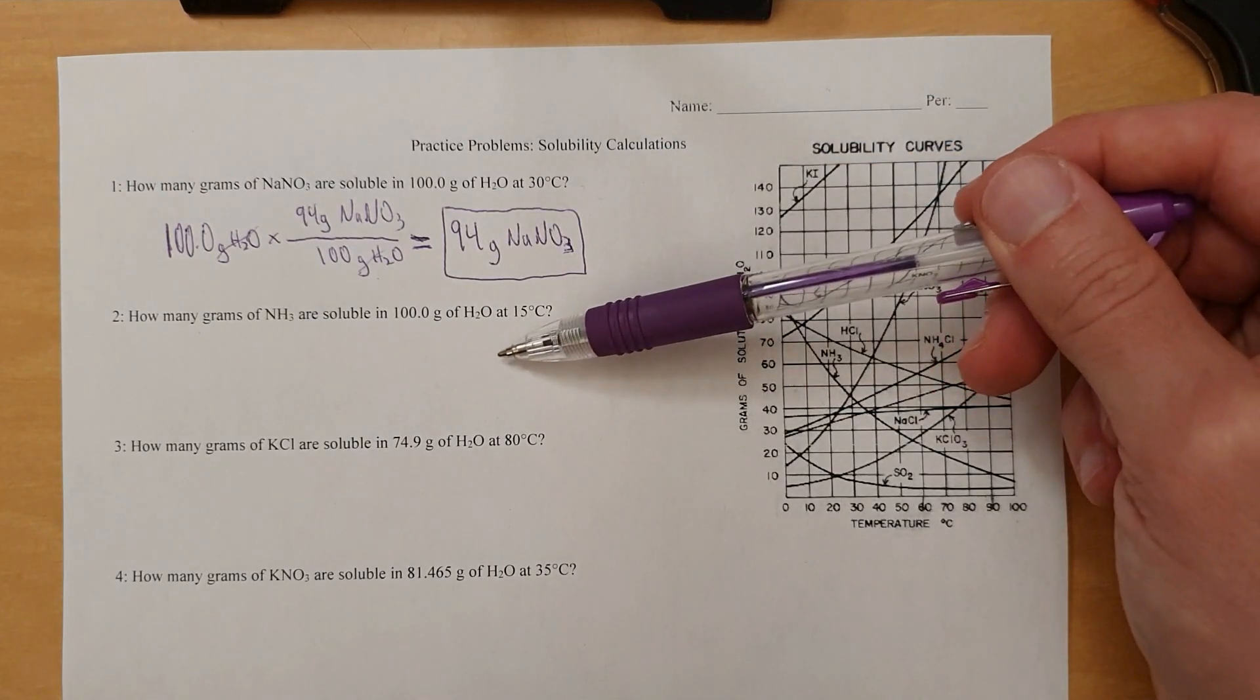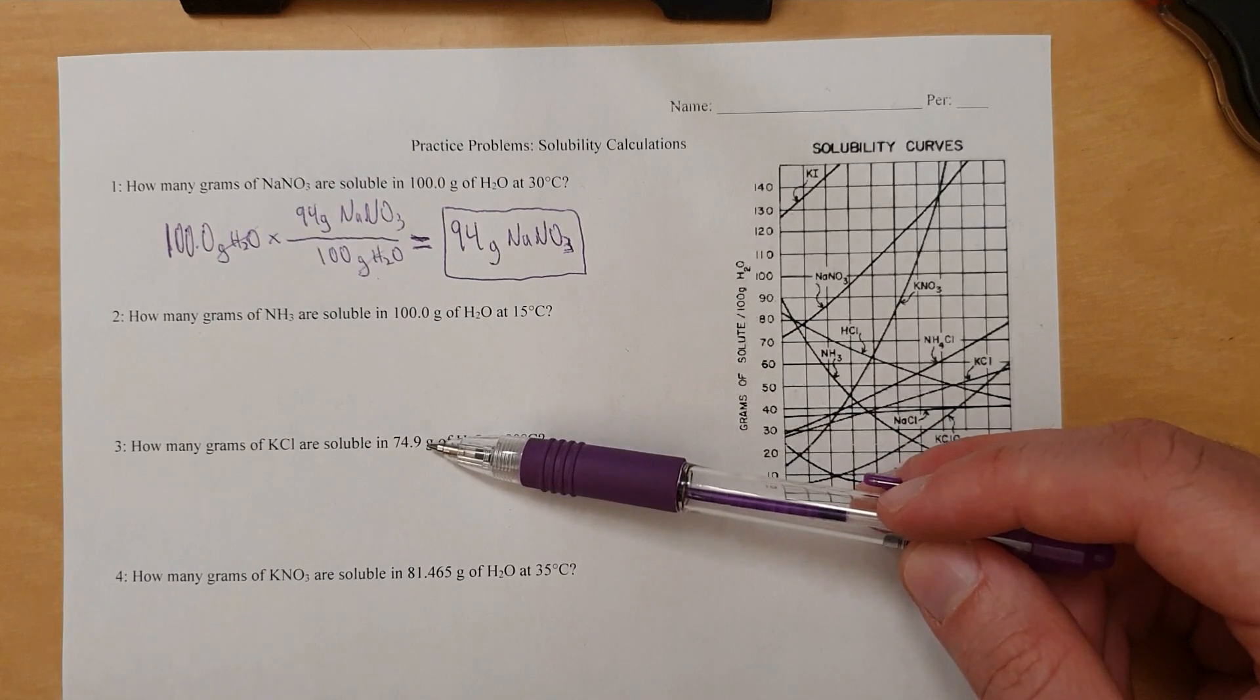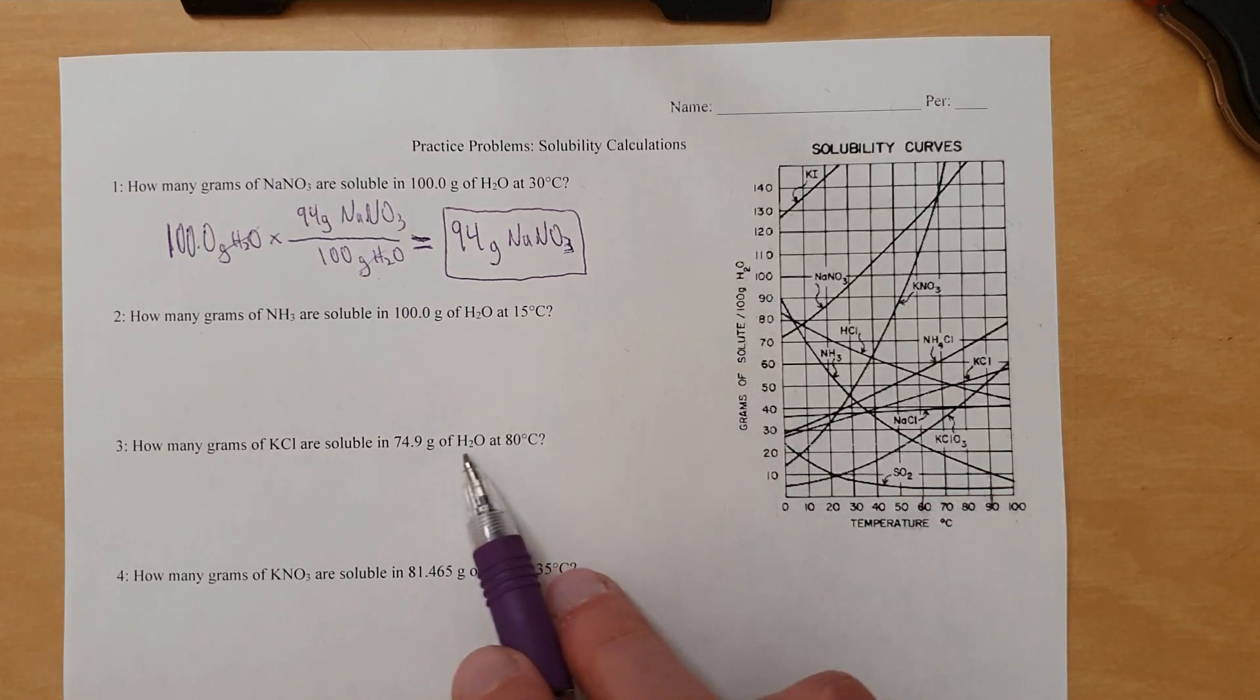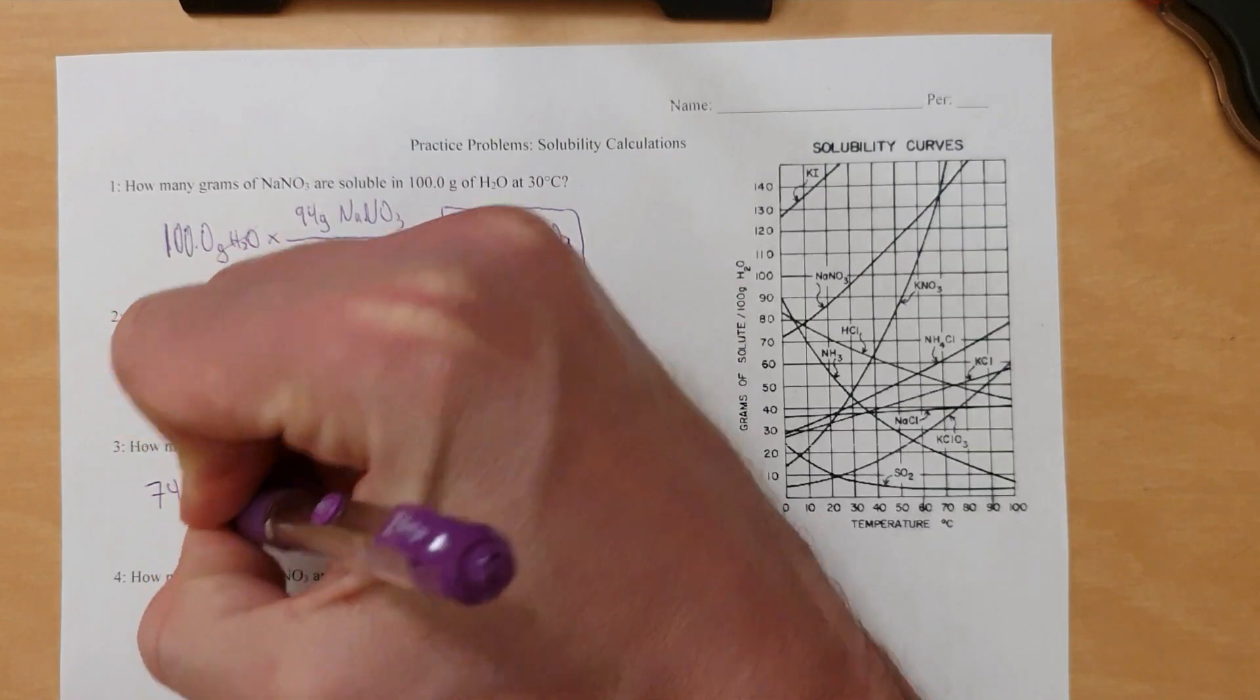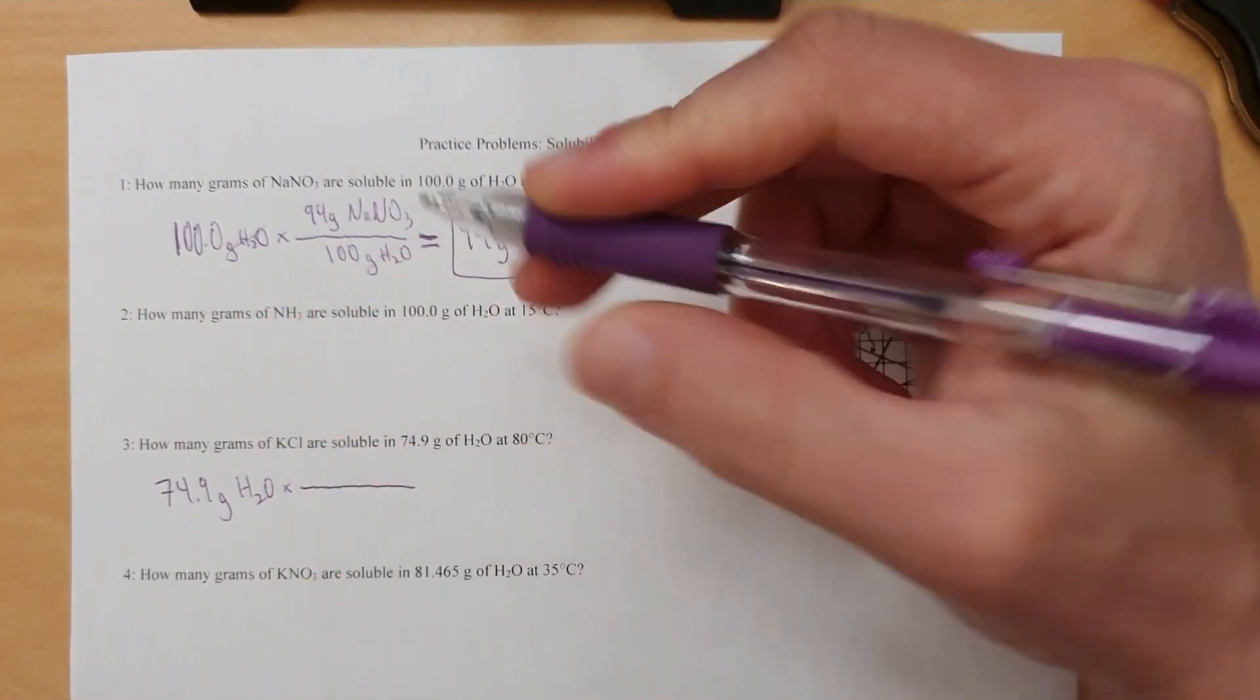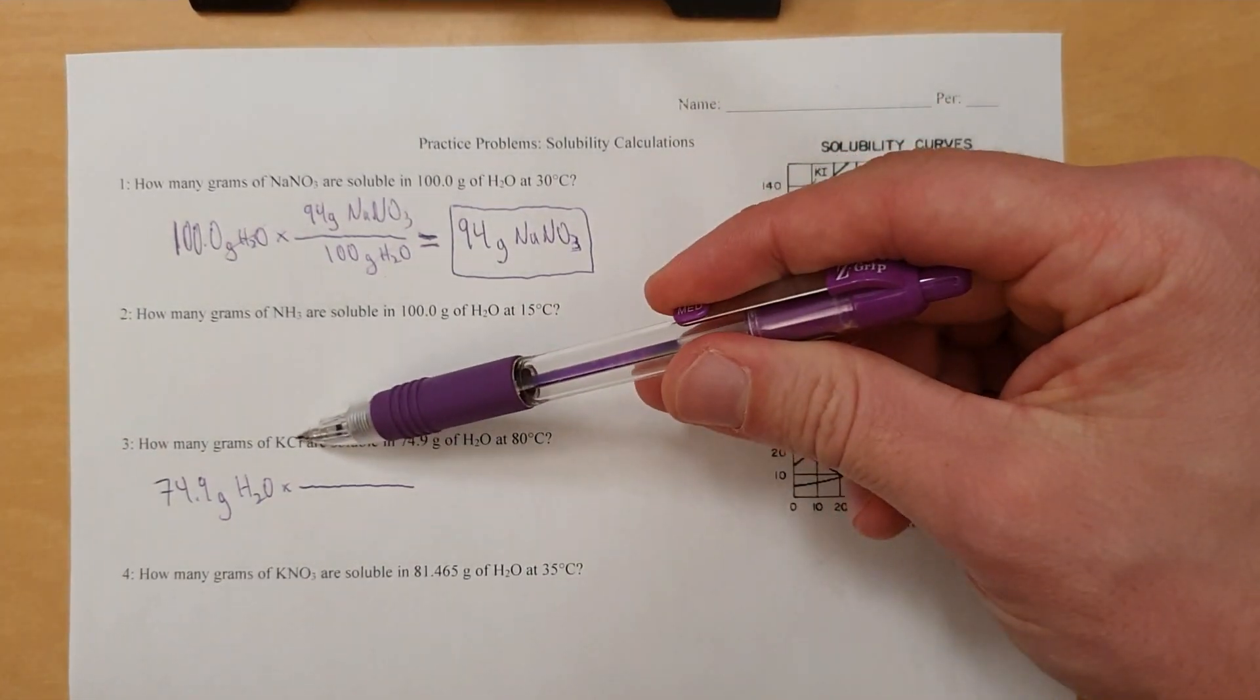This is going to go through the same process. Now let's look at what happens if it's not an easy 100 grams of water. Because this one's just like this. I'm skipping ahead to number three. We're going to follow the same path. This is our given, 74.9 grams of water. So I write that down, 74.9 grams of water, including units and chemical identity. Multiplication sign, conversion factor. And where do we look for the conversion factor? Right here on the graph, of course.